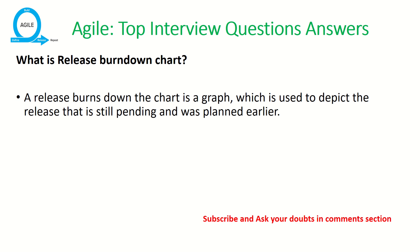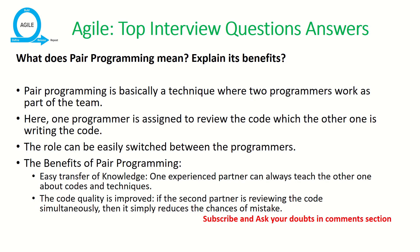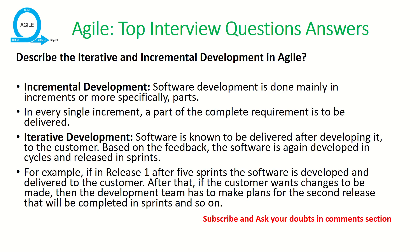The next question is: what do you mean by pair programming and its benefits? Pair programming is a technique where two programmers work as one team to solve a single complex problem. One programmer reviews the code while the other writes it. This leads to better collaboration and better solutions as two people cover all possible use cases. Roles can be switched, and benefits include easy knowledge transfer and improved code quality.